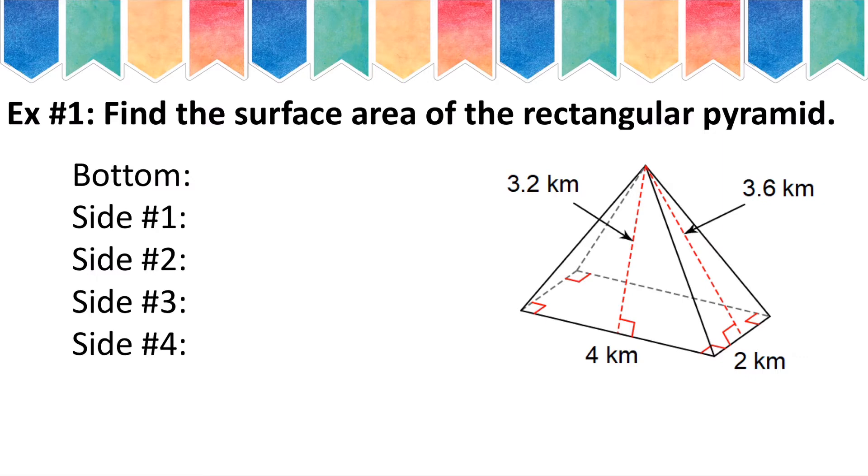So I'm going to start with the bottom. If I look at the bottom of this pyramid, it is a rectangular shape. And for the area of a rectangle, I simply take length times width. So for the bottom, I'm going to go 4 times 2, which makes 8.